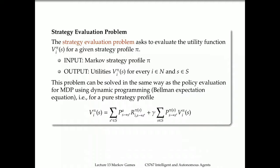The first problem is the strategy evaluation problem: given a Markov game and a strategy profile pi, compute the value functions V_i(pi) for all players i. This is very simple—once we know the Markov strategy, from the point of view of any player i we face a normal MDP. We can use the Bellman expectation equation and dynamic programming to get the value function. This can be solved in the same way as policy evaluation for MDP.